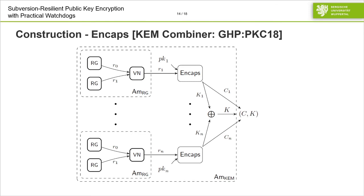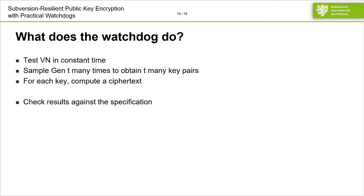With these keys available, let's see how we encapsulate the keys. Again, we use the von Neumann construction to produce random coins. Afterwards, the random coins and the corresponding public keys are fed into the Encaps algorithm, each outputting a ciphertext and a key. All the ciphertexts are simply output. However, the keys are all fed into a trusted XOR function, so k is the XOR of k1 to kn. How can a Watchdog efficiently test this? The Watchdog can test the von Neumann extractor in constant time. Additionally, it samples the GEN algorithm T-many times on uniform random inputs to obtain T-many key pairs, and for each public key it computes the ciphertexts. All results are checked against the specification, and if anything is not according to specification, the Watchdog outputs uniformly random.